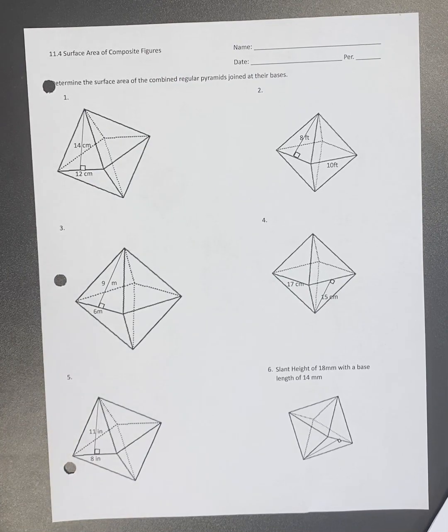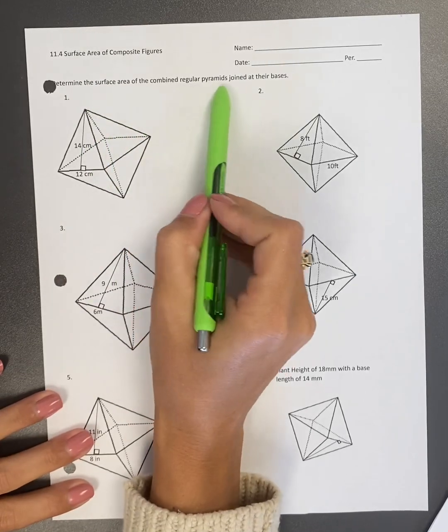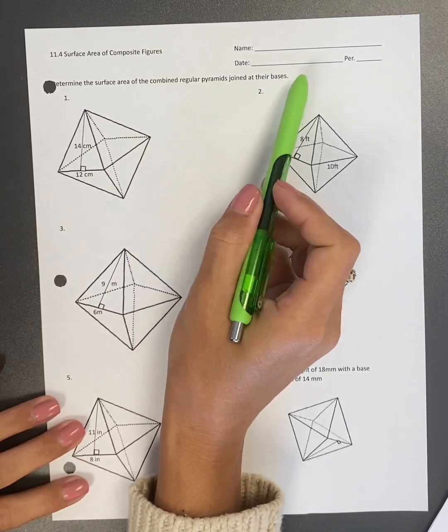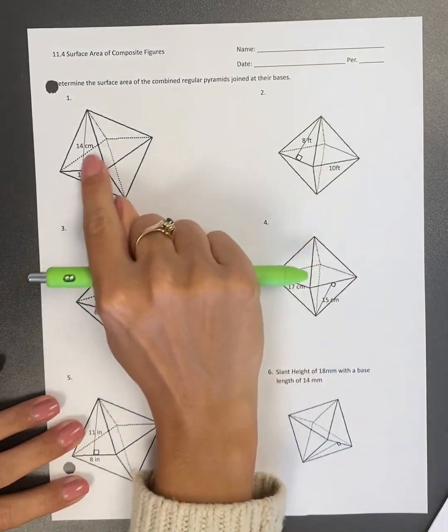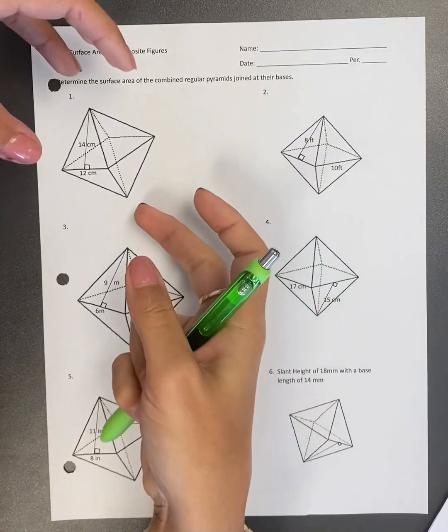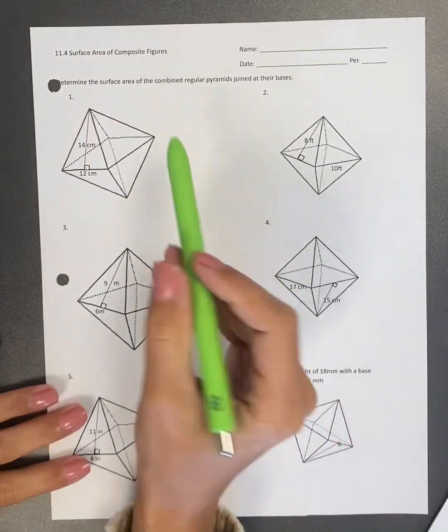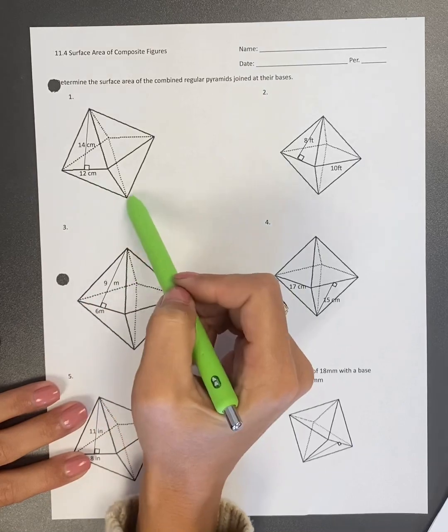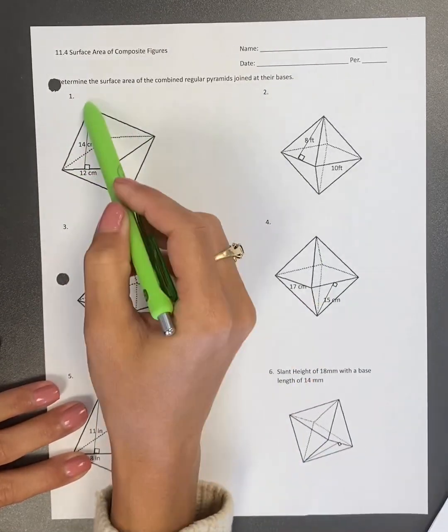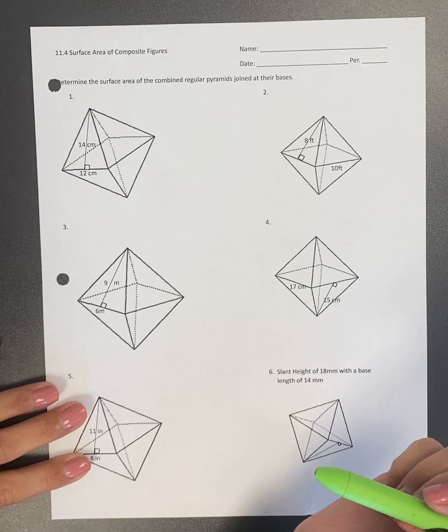So we have to determine the surface area of the combined regular square based pyramids that are joined at their bases. So they touch their bases together. So they're actually touching at the bases. So surface area literally means if I were to wrap this like a present and put a little bow on top and wrap it, how much wrapping paper would I actually need?